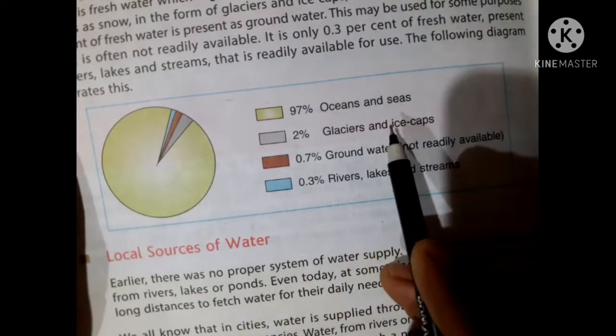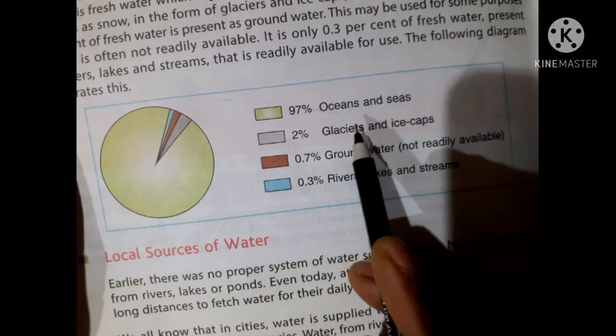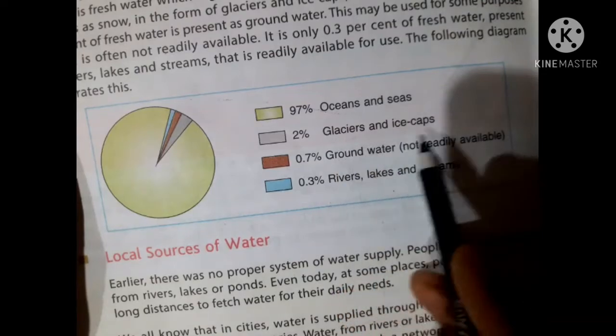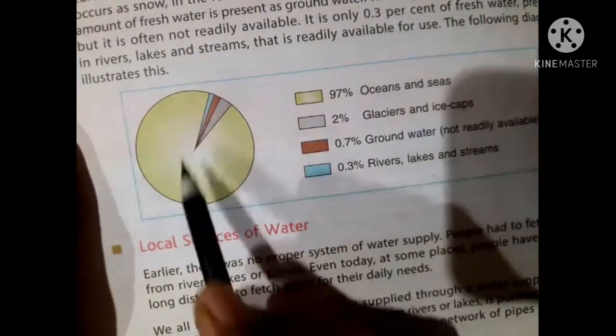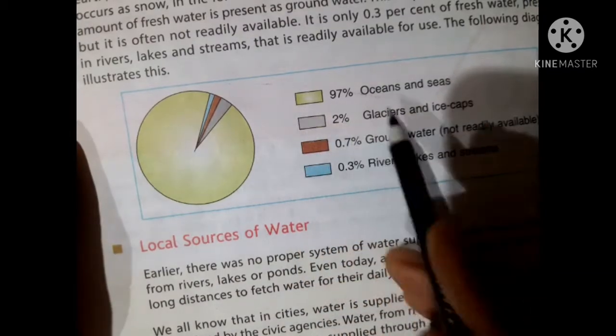Percentage of water in oceans and seas, glacier and ice caps, groundwater, rivers, lakes. You have to draw this diagram and label percentage.